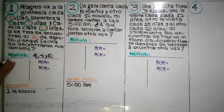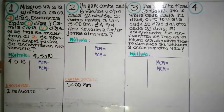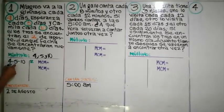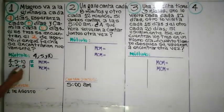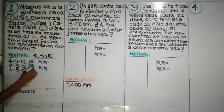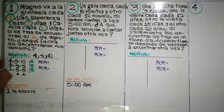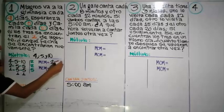Calculando el mínimo común múltiplo de cuatro, cinco y diez: dividimos entre dos, obtenemos dos, uno y cinco; dividimos entre dos nuevamente, obtenemos uno, uno y no tiene; luego entre cinco, obtenemos uno y uno. El mínimo común múltiplo es dos por dos por cinco.